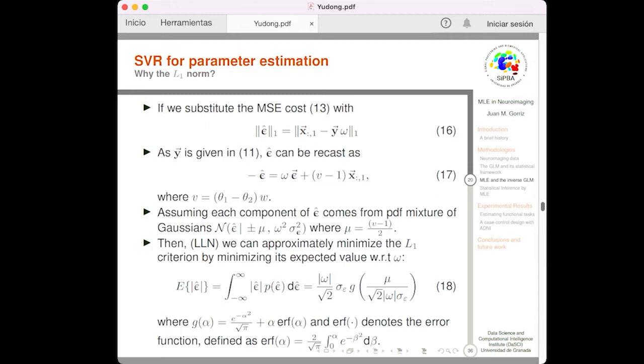Okay? So, if we substitute the L2 norm by the L1 norm, we have a different approach to solve the same problem. As is given in 11, epsilon hat can be recast as epsilon arrow in this way. And, where V is the contrast multiplied by omega. So, assuming each component of epsilon hat comes from a PDF mixture of Gaussians, it can be demonstrated easily. Then, the law of large numbers give us a way to approximate this minimization, the minimization in equation 16, by minimizing the expected value of epsilon hat. Some calculus gives the following step, on the right hand side of equation 18.